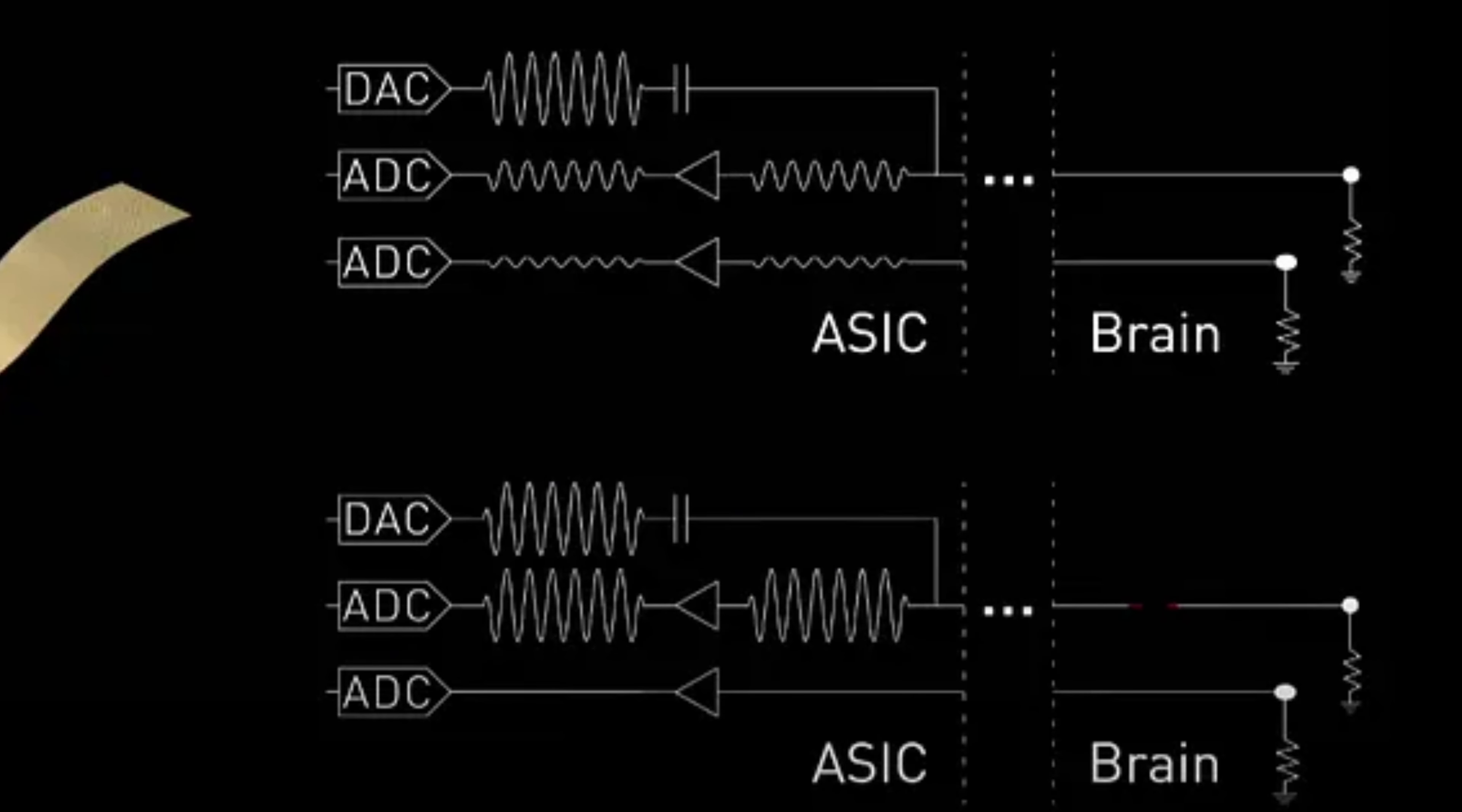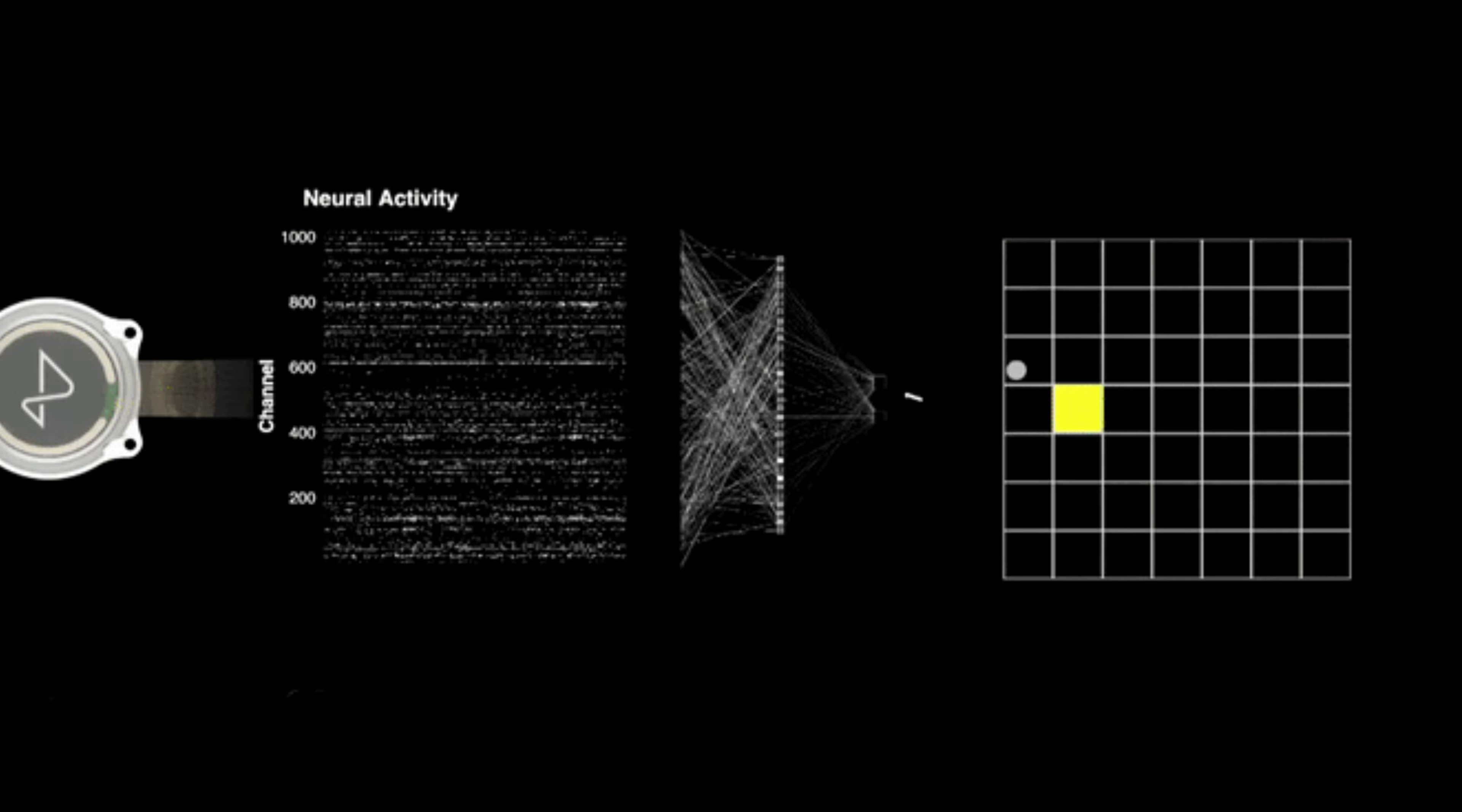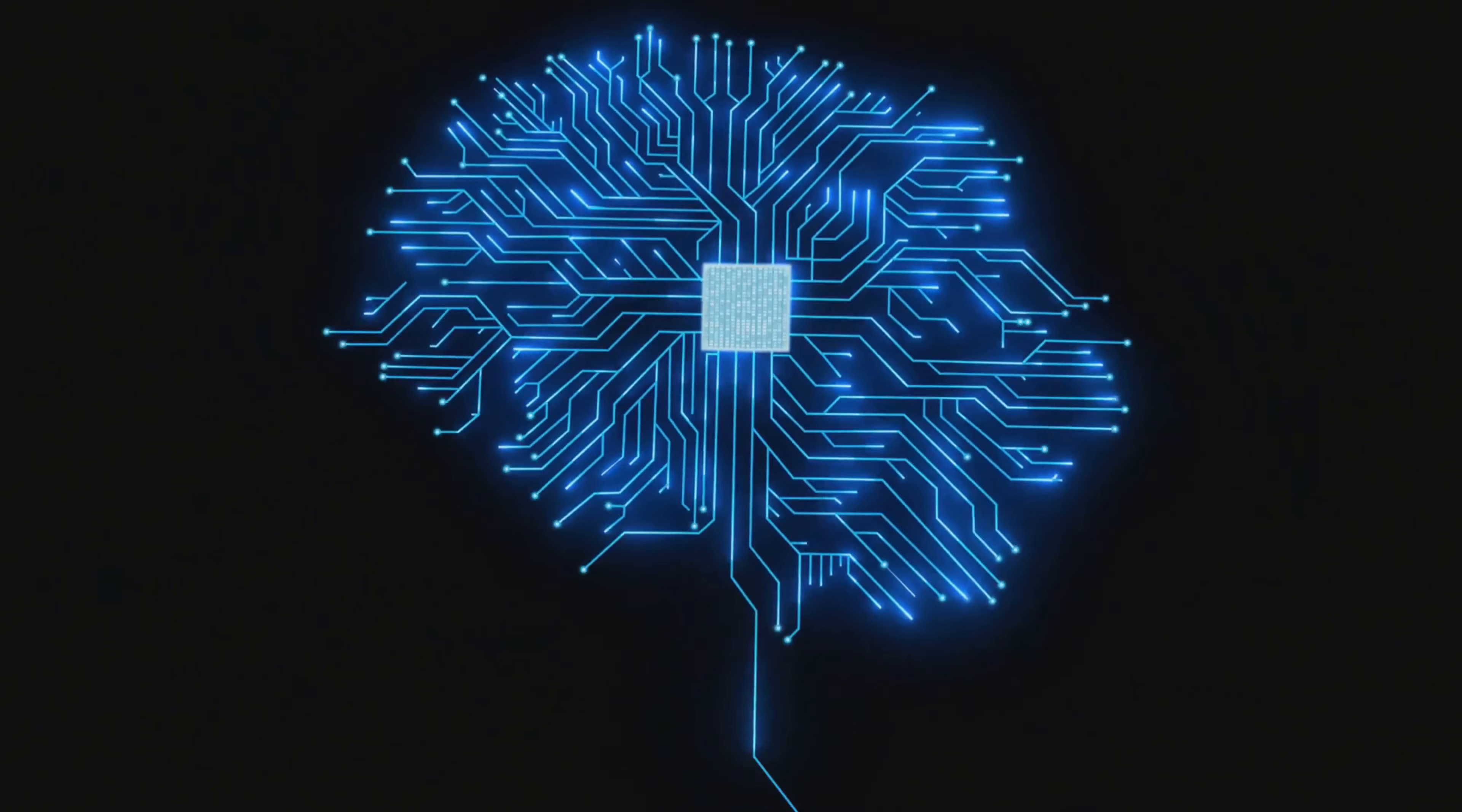This ASIC, consisting of 256 individually programmable amplifiers, or analog pixels, on-chip analog-to-digital converters (ADCs), and peripheral control circuitry, tackles the immense challenge of chronic recording from thousands of electrode sites. It amplifies the faint whispers of neural signals, digitizes them, and streams the data for real-time processing, all while consuming minimal power.